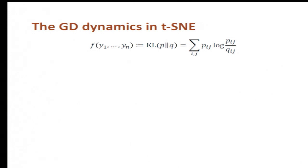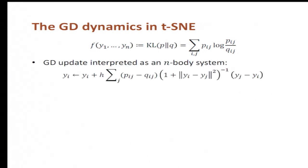So what does the gradient descent look like? We can actually write down the gradient descent dynamics in this algorithm, and it looks like this. Basically, the gradient with respect to Yi can be written as a summation of all j of some complicated quantity that we call lambda_ij times the difference Yj minus Yi.